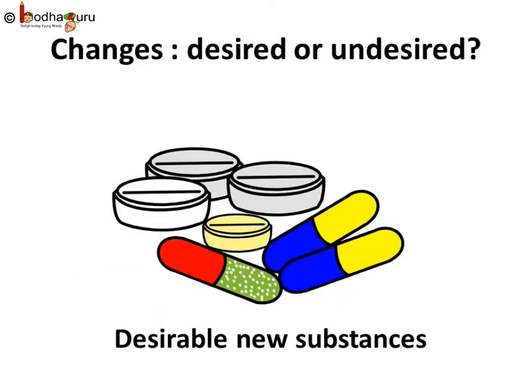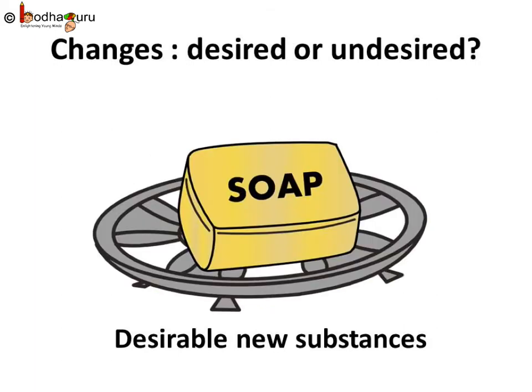Even chemical changes are very important in our lives. All new substances are formed as a result of chemical changes. A medicine is the end product of a chain of chemical reactions. Useful new materials such as plastics and soaps are produced by chemical reactions. So we know many types of changes are useful to us.